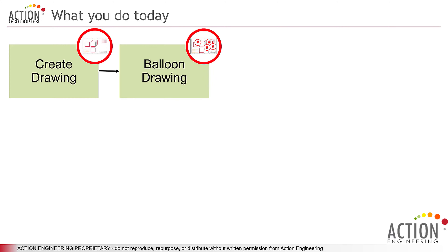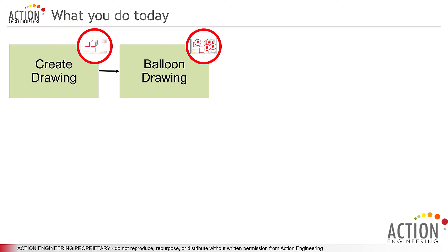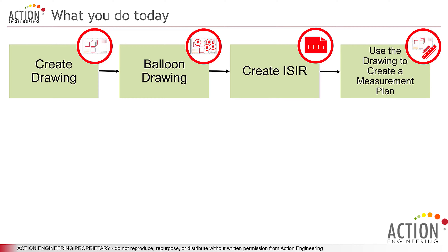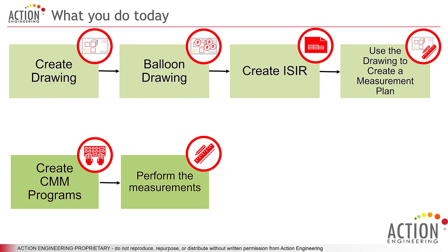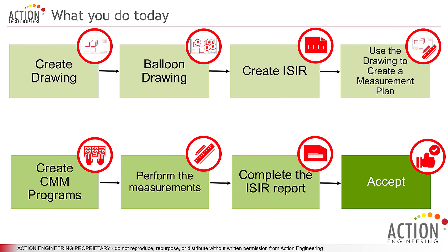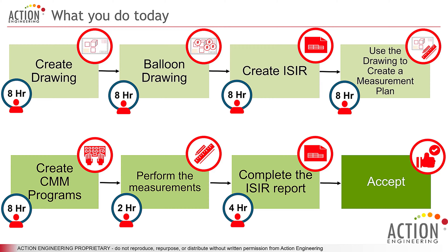First, a drawing is generated and ballooned. A quality planner uses the drawing and balloons to generate an ISIR or FAI form, then uses the drawing and form to create a measurement plan — mostly a manual data entry process today. The quality plan is passed to a CMM programmer to create a machine code program to measure the part. Then the measurement is performed on the CMM, sometimes supplemented with additional measurement resources. All measurements are recorded in the ISIR or FAI form, and finally the part is accepted. I estimate this work takes roughly six days from start to finish.